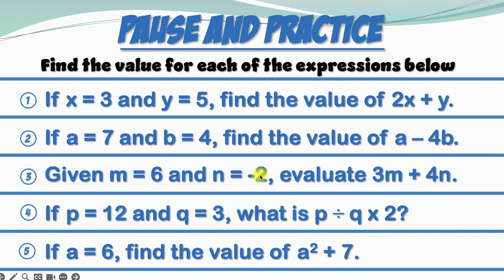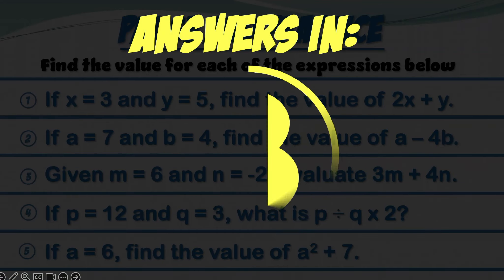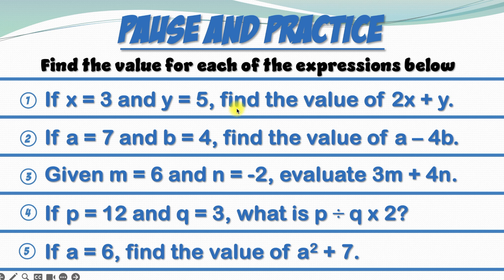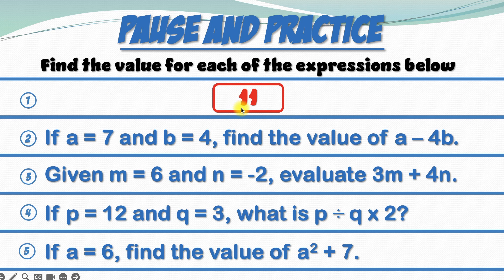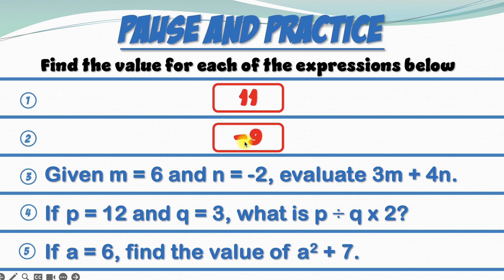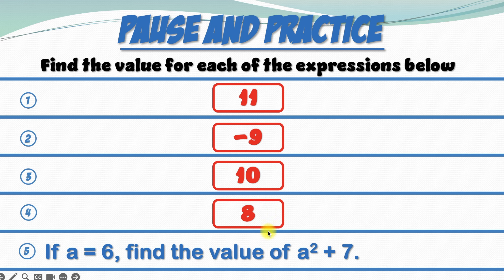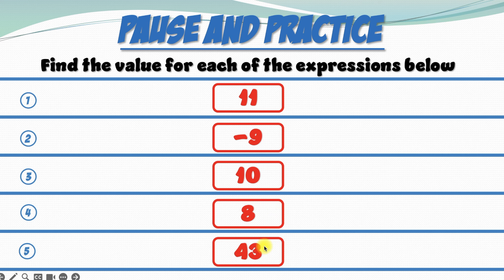Here's your pause and practice. Hit the pause button and try these questions. When you think you have the answers, hit play to see if you're right. Ready, set, go. Let's check those answers: number 1 is 11, number 2 is negative 9, number 3 is 10, number 4 is 8, and number 5 is 43.